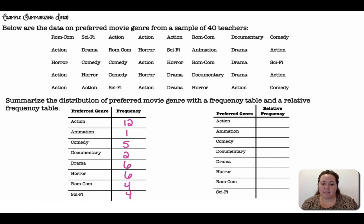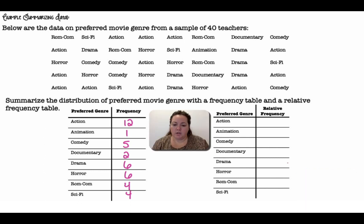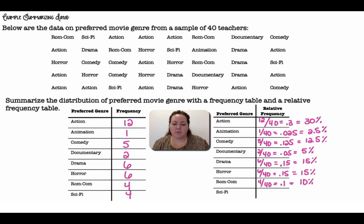And I'm going to go ahead and change that to a relative frequency table. So I need to change these into percentages or proportions. So it was out of 40 total. So I'm going to take for action 12 out of 40, which becomes 0.3. And that would be 30%. Remember fractions just mean division. One out of 40 is 0.025, so 2.5%. Comedy, five out of 40, 12 and a half percent. Documentary, two out of 40, five percent. Drama, six out of 40, 15%. Horror was also 15%. Rom-com and sci-fi are both four out of 40, which come out to be 10%. So there's our relative frequency table. It's all in proportions or percentages.